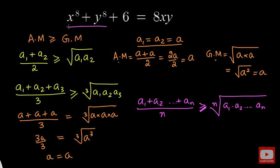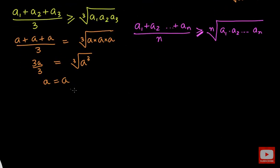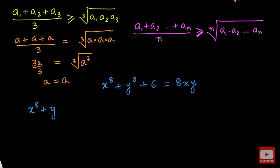Now let us come to our problem. The question is x to the power 8 plus y to the power 8 plus 6 equals 8xy. Looking at the left-hand side, x to the power 8, y to the power 8, and that 6 can be written as 1 plus 1 plus 1 plus 1 plus 1 plus 1. So we have split 6 into 6 ones. Counting x to the power 8, y to the power 8, and the 6 ones, we have 8 entries total.